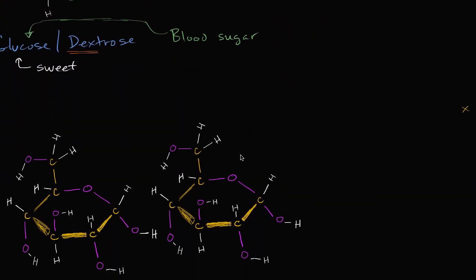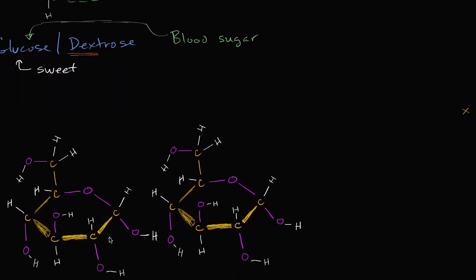Here I've copied and pasted two glucose molecules. We can number their carbons: one, two, three, four, five, six — and the same for the second molecule. We have them in their cyclic form.